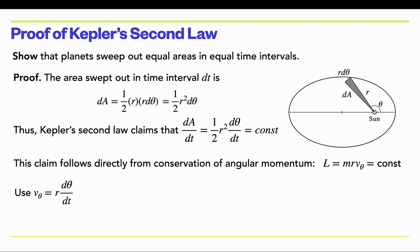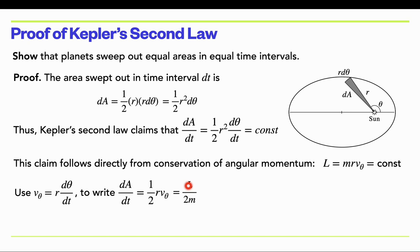The angular momentum magnitude is the planet's mass times r times the tangential component of its velocity, v_θ. Since angular momentum is conserved, this quantity is a conserved quantity. Using the result from the previous lecture that v_θ = r dθ/dt, we substitute into dA/dt to get one half r v_θ. Since r v_θ equals angular momentum over mass (l/m), dA/dt is just l over 2m. Since angular momentum is constant, therefore dA/dt is a constant — and that's what we set out to prove.